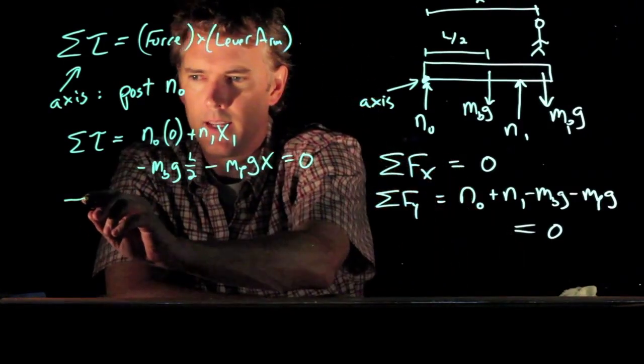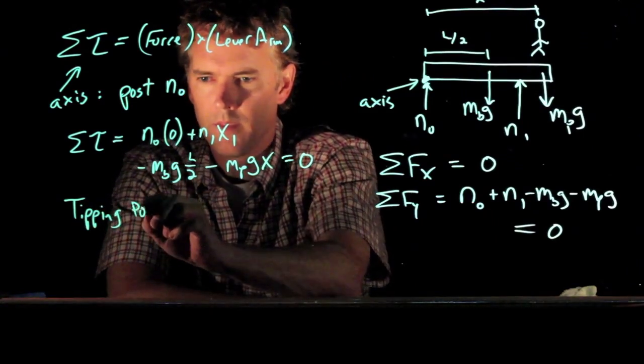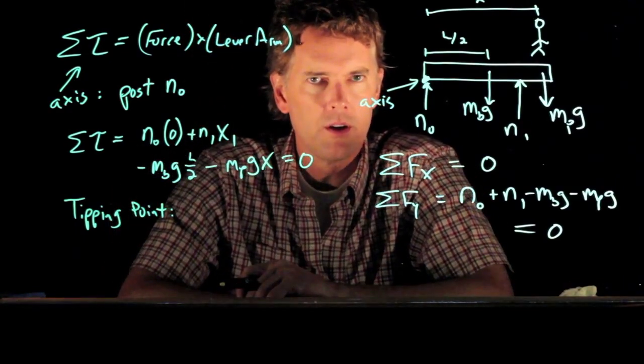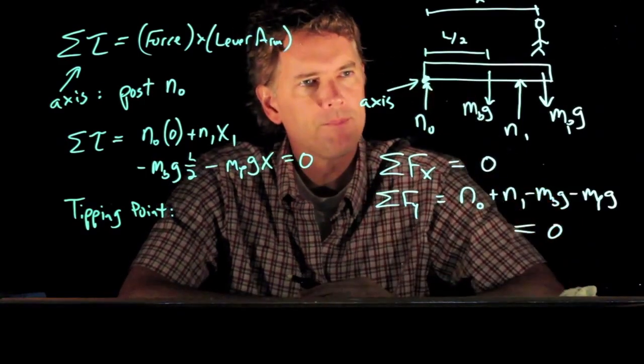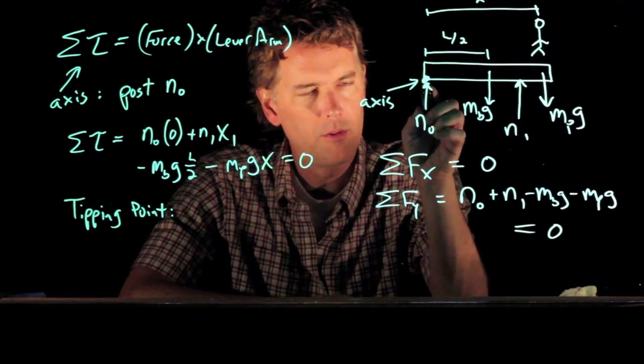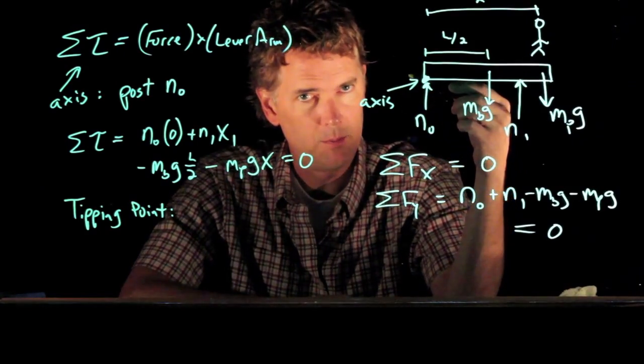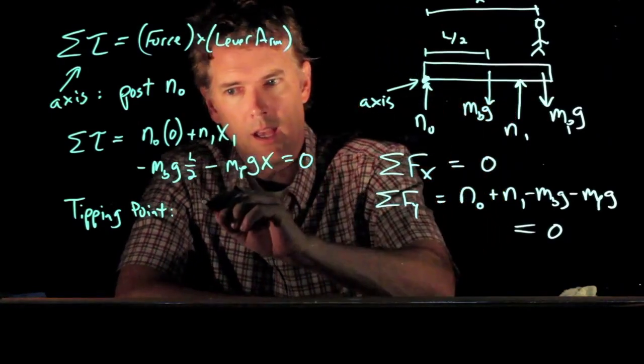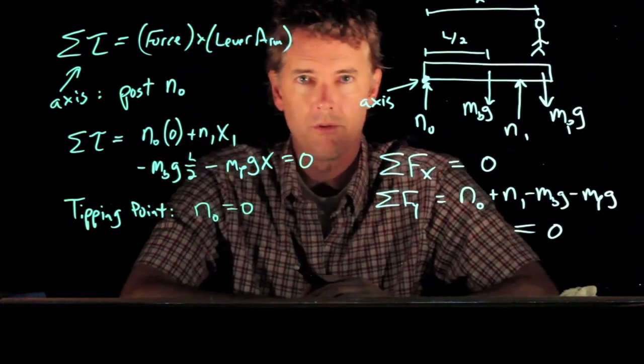And it is this. We have to think about the physics of it a little bit. And so there is a condition for tipping. Namely, when this beam tips up, it loses contact with the post on the left, with post n naught. And so if the beam loses contact with the post, the post can't push up on that beam at all. And so the condition is n naught equals zero.